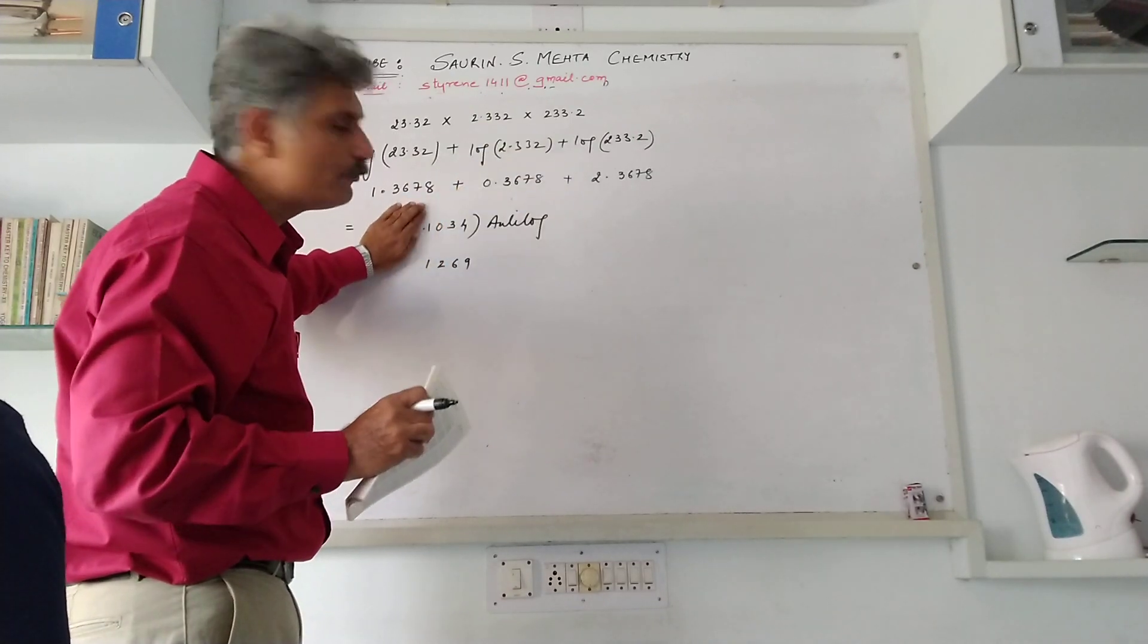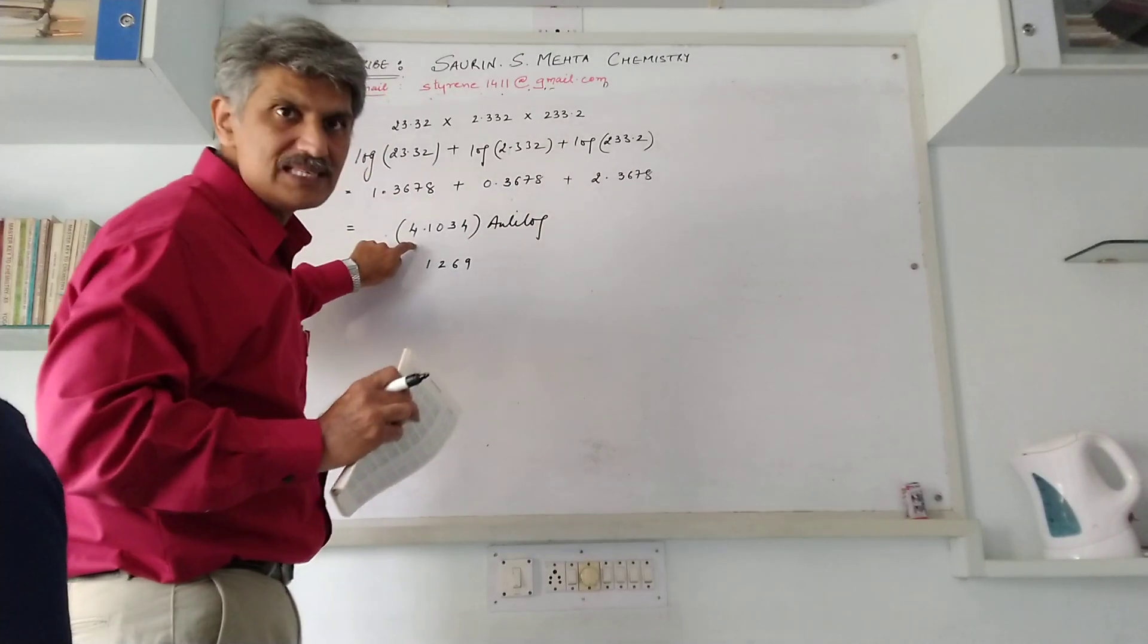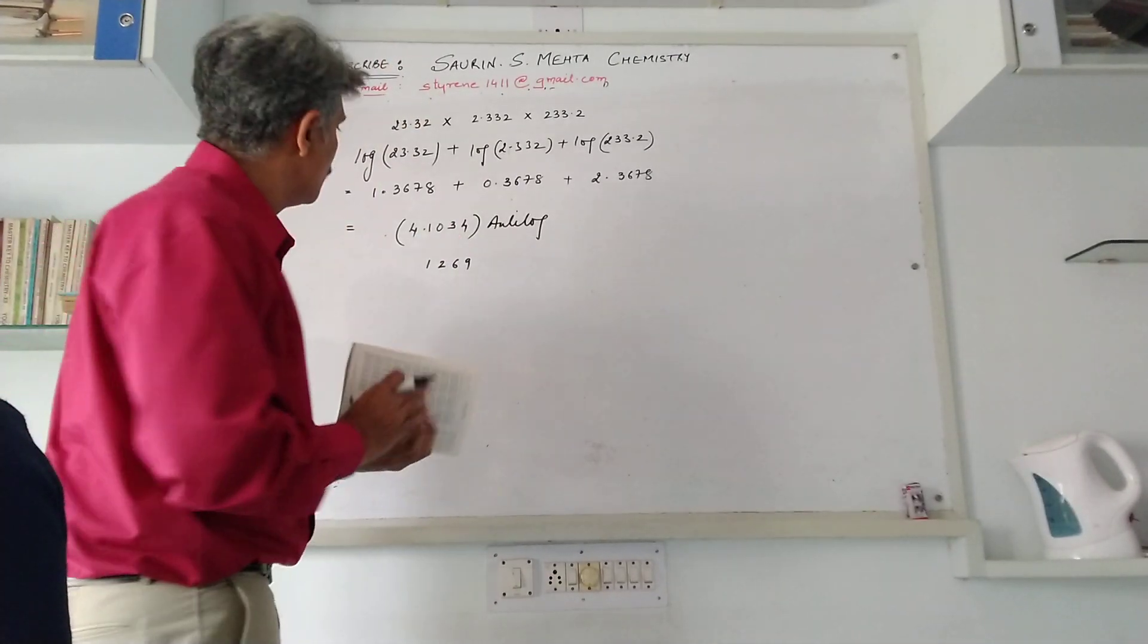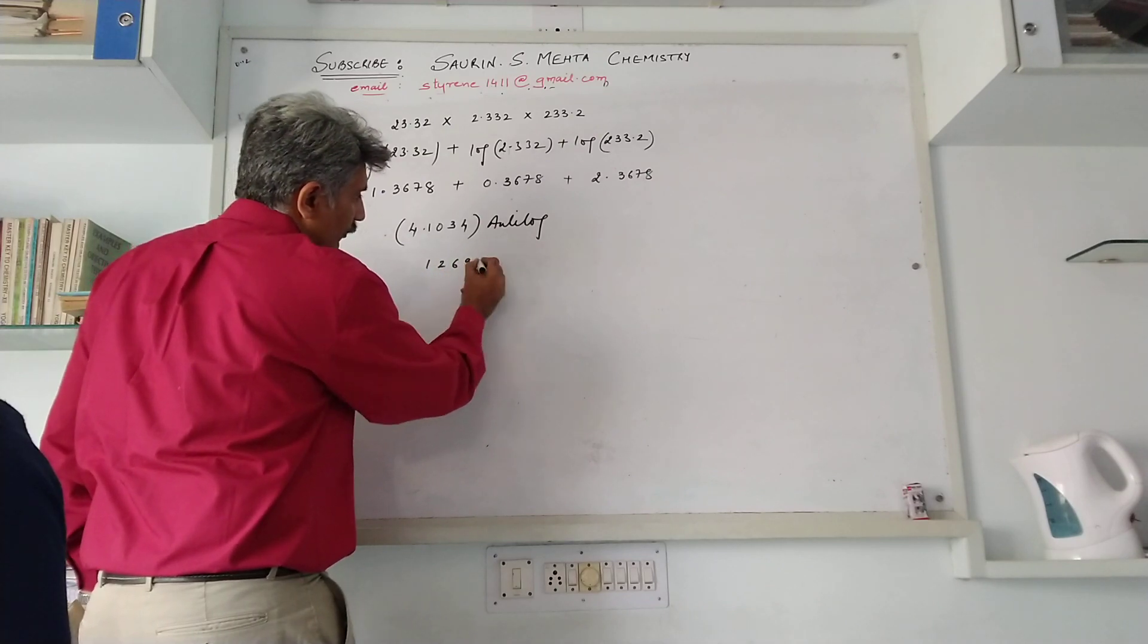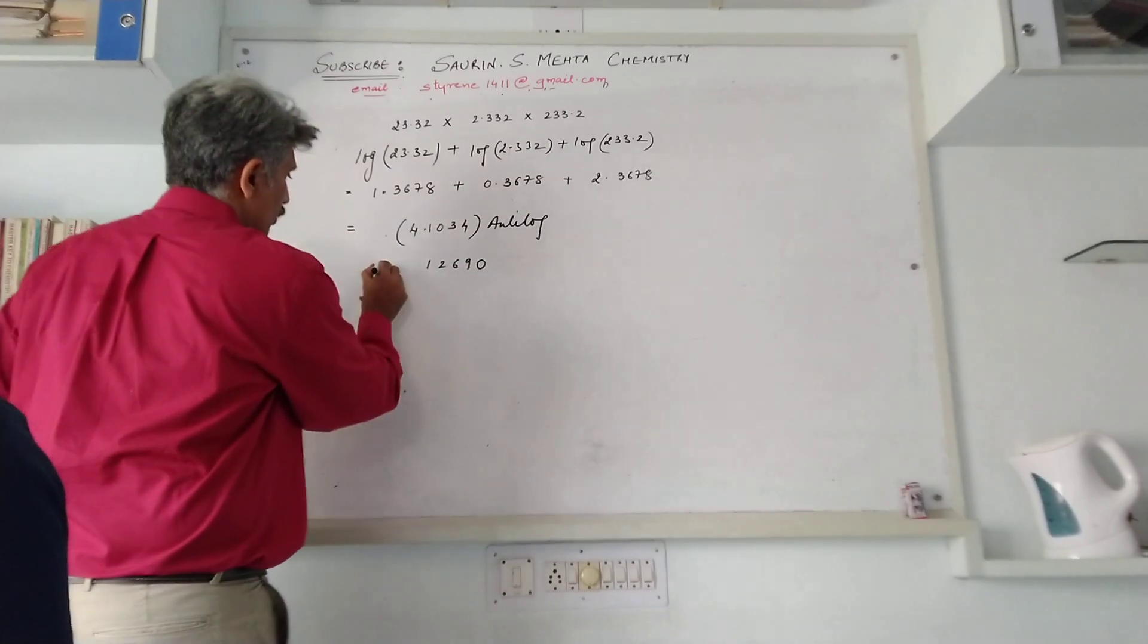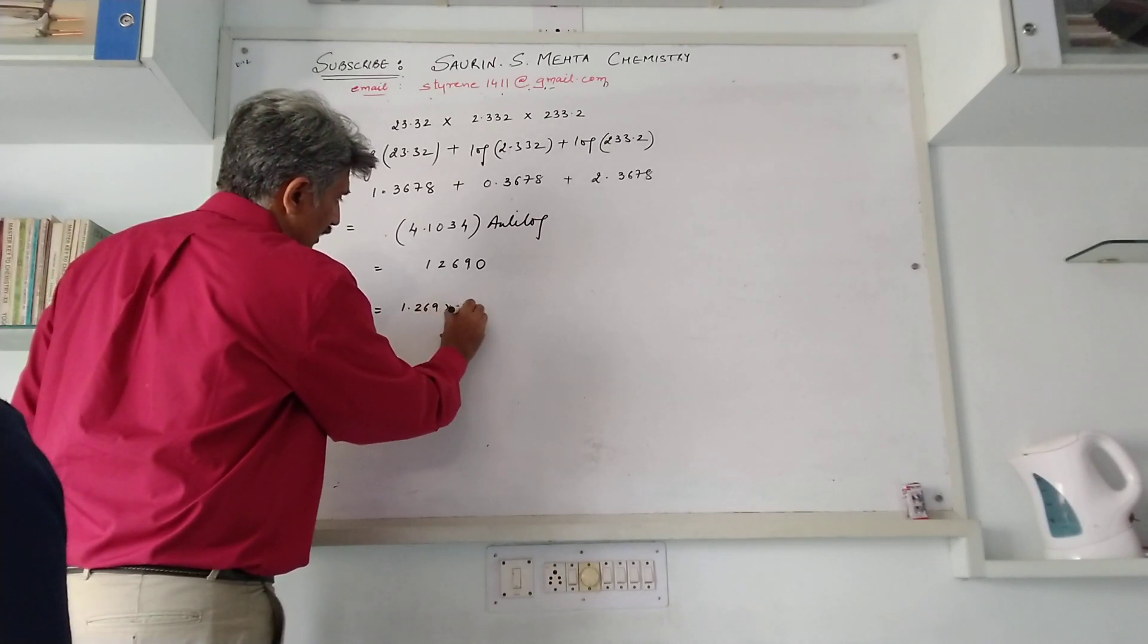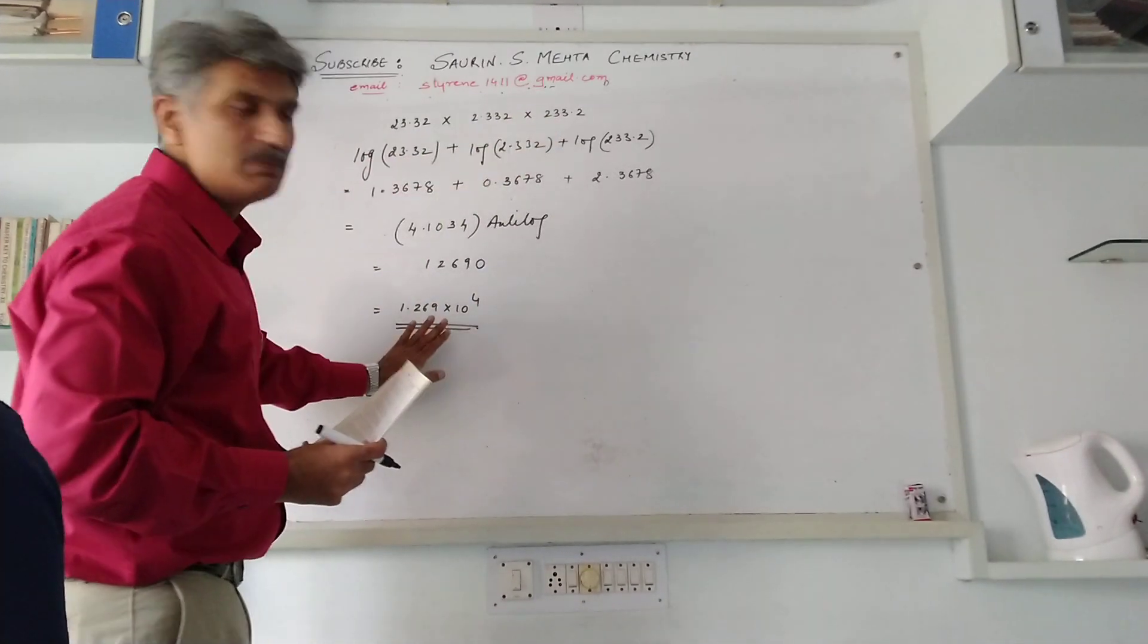If 4 was not there, it was 0. But if 4 is there, you add it in the anti-log. Total digits should be 5, so we will move 5 digits from here: 1, 2, 3, 4, and the 5th digit is this. So the value will be 126,900. The same thing can be written in standard form as 1.269 × 10^4. This is the final answer for these three.